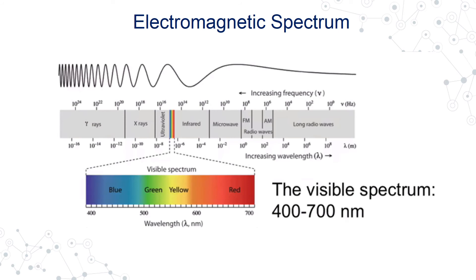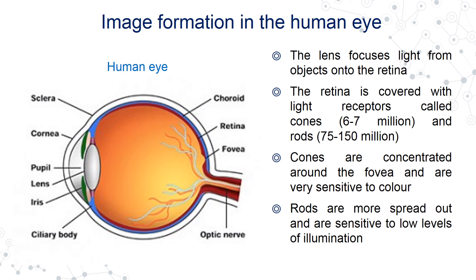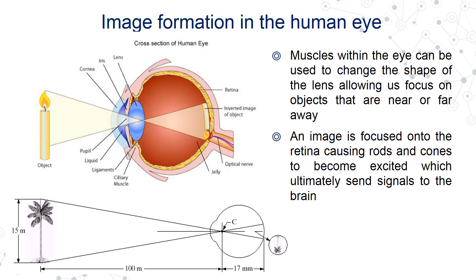We then look at the electromagnetic spectrum and focus more on the visible spectrum, the structure of the human eye, and how the image is formed in the human eye — specifically how an object placed in front of the eye is perceived and how the image is formed on the retina.